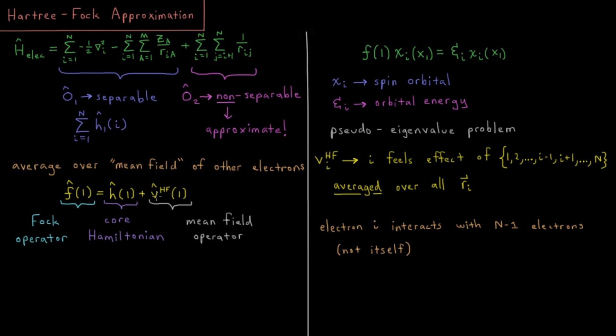plus what we call a mean field operator, represented as VHF for electron one. So this mean field operator is going to be the magic of how we deal with its interactions with all other electrons, having to be approximate and dealing with that pairwise problem.